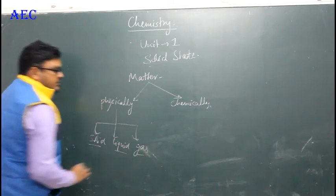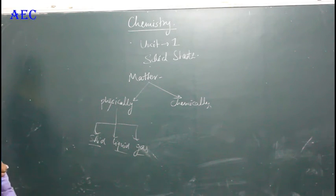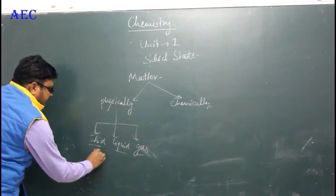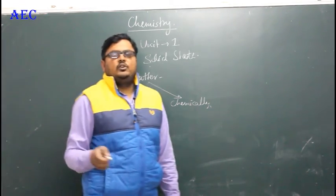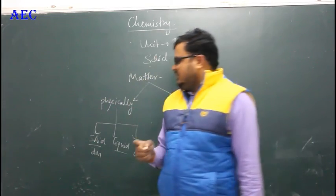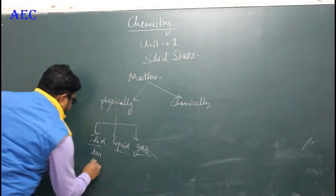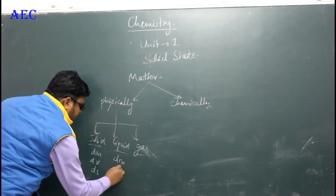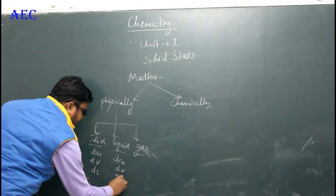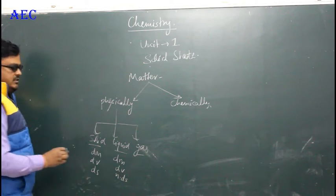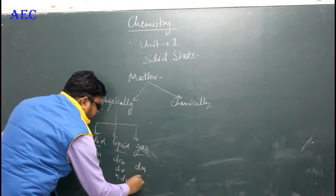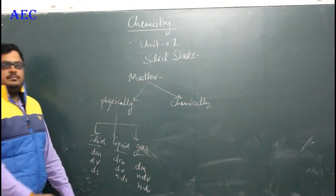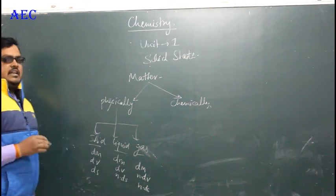The short definitions of these physical classifications are: solid is that form of matter which has definite mass, definite volume, and definite shape. Liquid has definite mass and definite volume but no definite shape. Gas has definite mass but no definite volume and no definite shape.